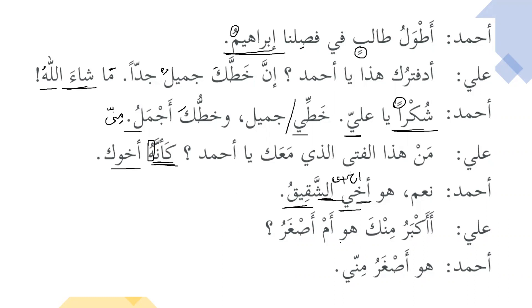Aliun: akabiru minka huwa am asogharu — is he older than you or younger than you? We have the expression am as well; hamzatul istifham and am come together. Generally the noun that comes after hamzatul istifham should also come after am, and we have an adjective after each. Akbaru minka huwa am asogharu — is he older or younger than you? Ahmadu: huwa asgharu minni — he is younger than me. After asgharu we have min, which is used for comparative.